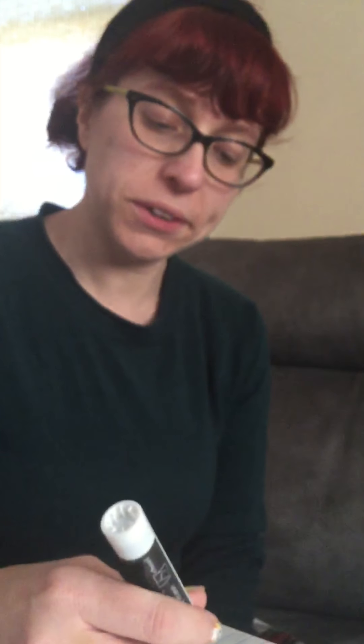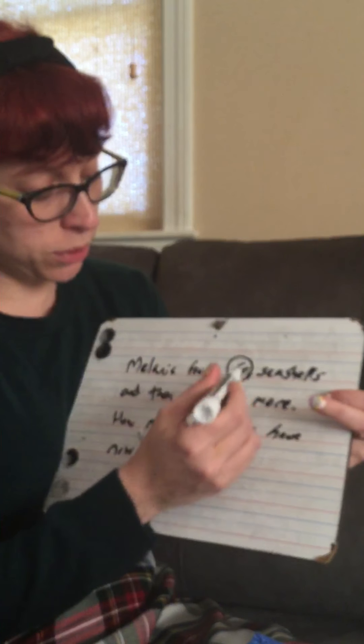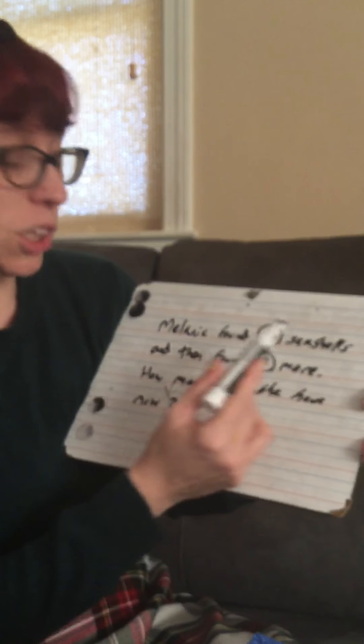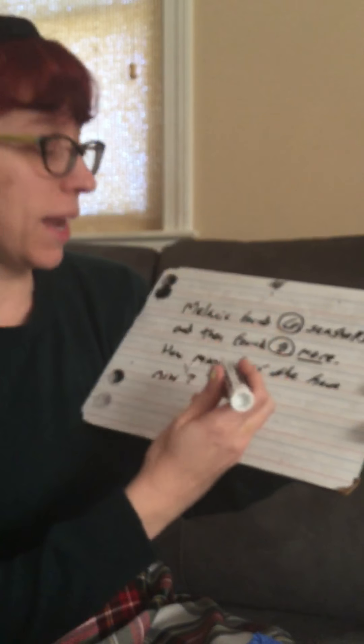Let's see if I have any pluses here. Let's make our own. So let's say Melanie found six seashells and then found two more. How many does she have now? So once again, we're going to circle the numbers and read the information. Melanie found six seashells, then found two more. The word 'more' is the key — more means you're adding. So six plus two.